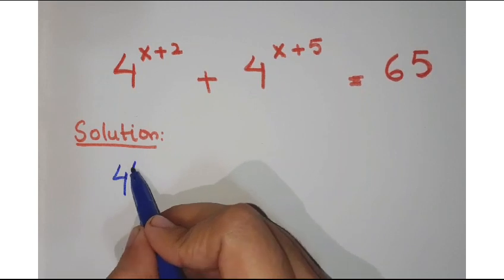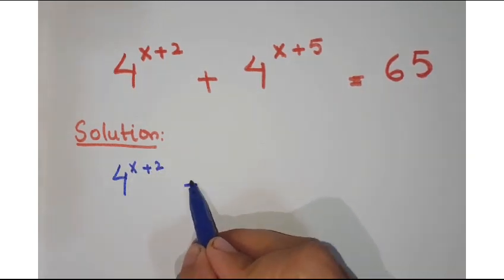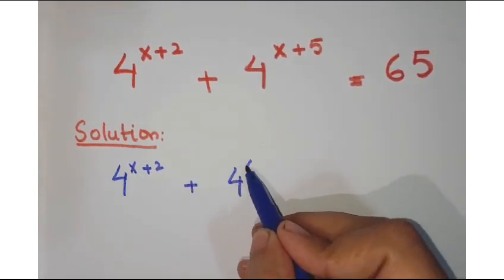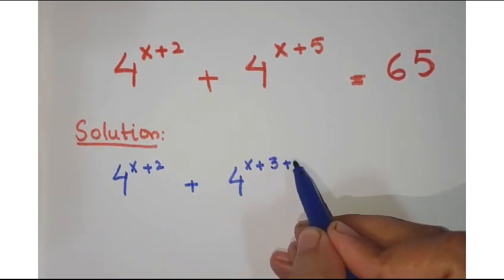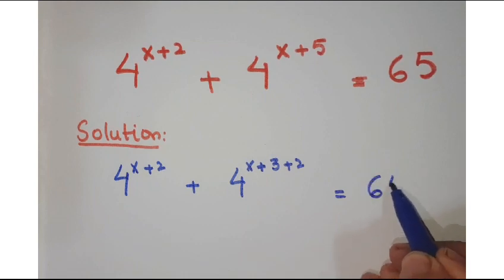Let's see how we proceed. 4 to the power x plus 2 plus this 4 to the power x plus 5 can be written as 4 to the power x plus 3 plus 2 equals 65.